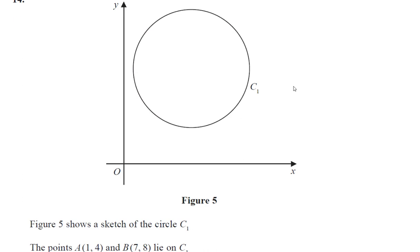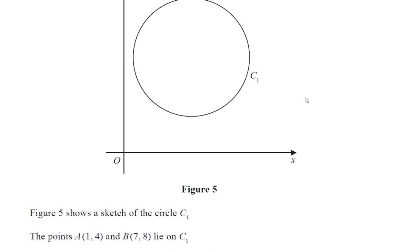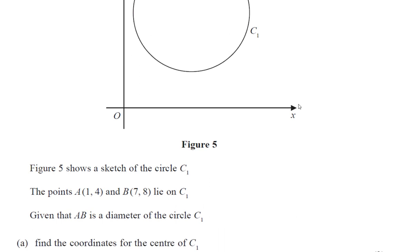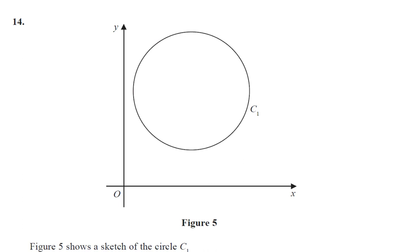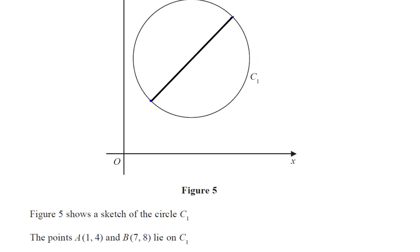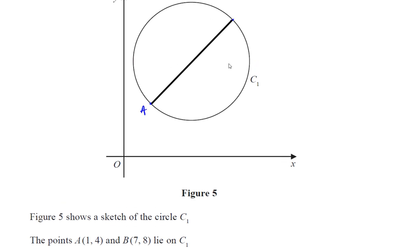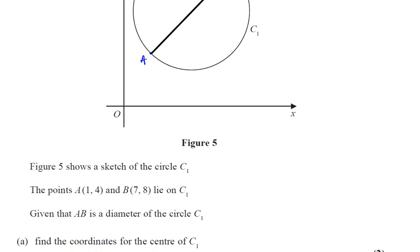So they've given us a sketch of a circle C1. The points A(1, 4) and B(7, 8) lie on C1. Let's just estimate where these points would be - say 1, 4 here and 7, 8 over there somewhere. I'm not sure exactly, just making a sketch. We join those together. So that would be a possible position of A and B. The sketch shows they lie on C1, which means they lie on the circumference of C1.